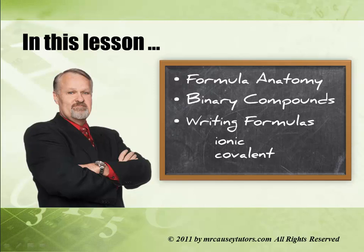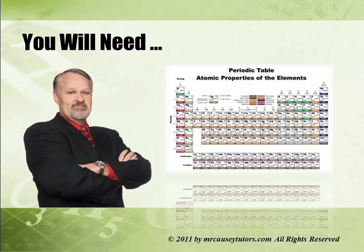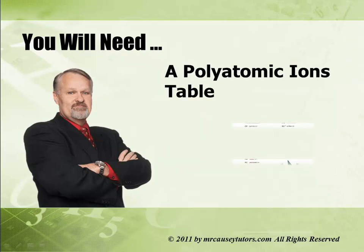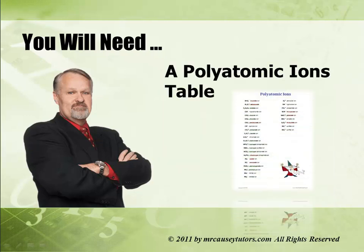In this lesson, we'll go through the formula anatomy, binary compounds, writing formulas, and ionic and covalent formulas. You will need a periodic table, unless you have it memorized. You'll need a list of polyatomic ions, and if you get my list from one of the previous videos, you'll have a list of the metal cations and the prefixes as well.